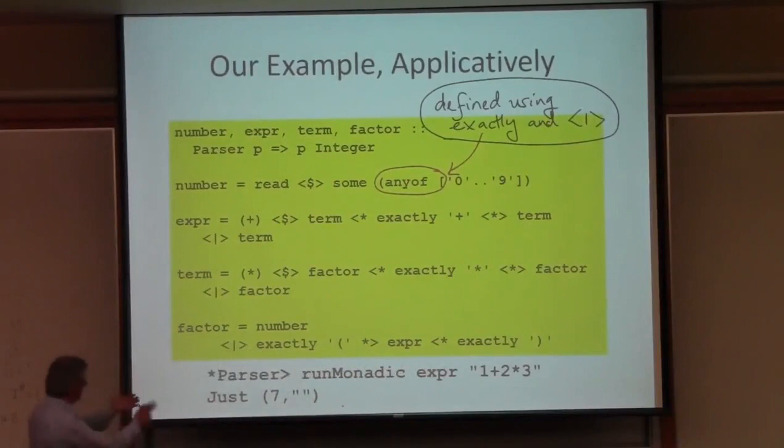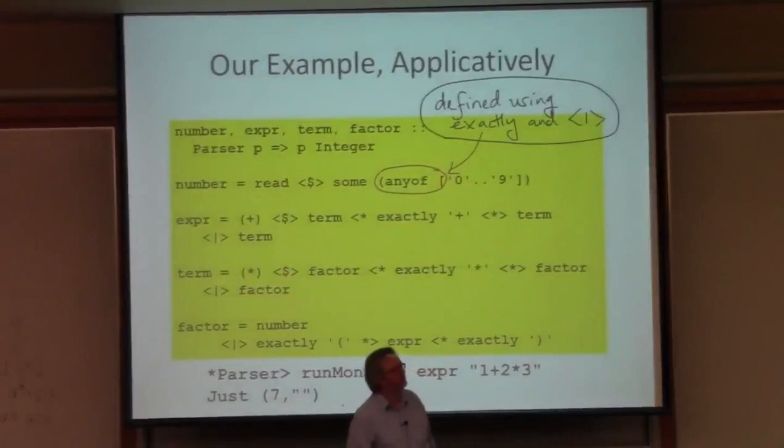And if I run it, I'm using the maybe monad at the bottom of all of this, then given 1 plus 2 times 3, I get just 7 with no input remaining.